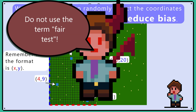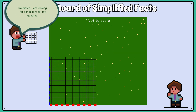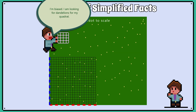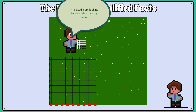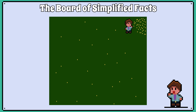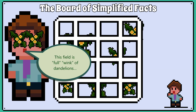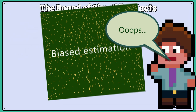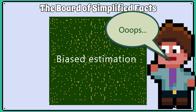Do not use the phrase 'fair test.' Biased sampling would be a situation where you would purposely try to place the quadrat where you see dandelions, or where you don't, depending on your motivation. If the field had a corner that was filled with dandelions and we only sampled in that area, when we do our calculation we would get an overestimation of how many dandelions are in the field.